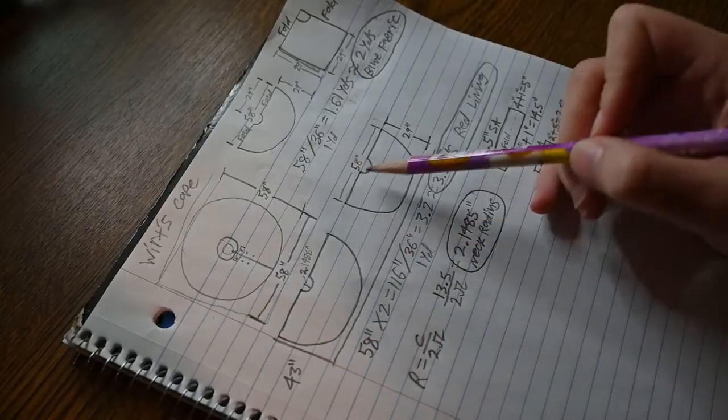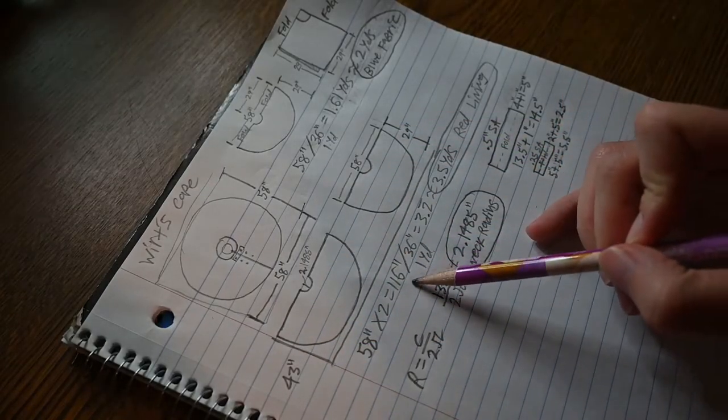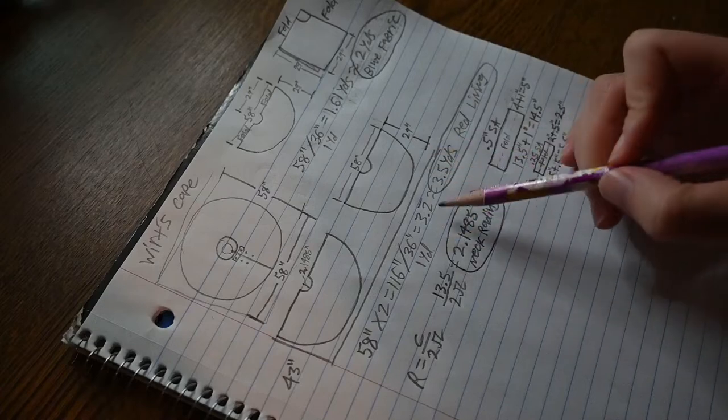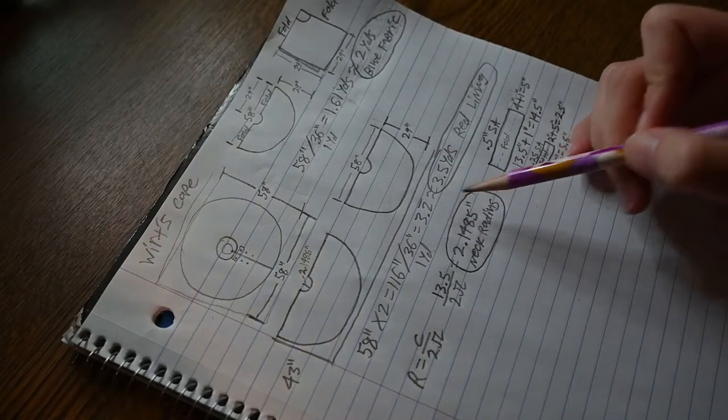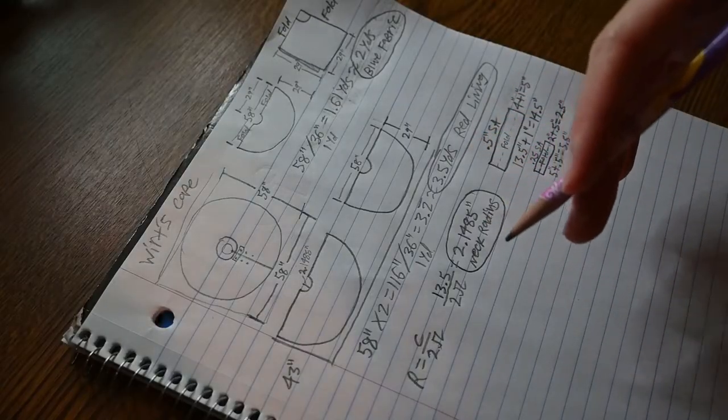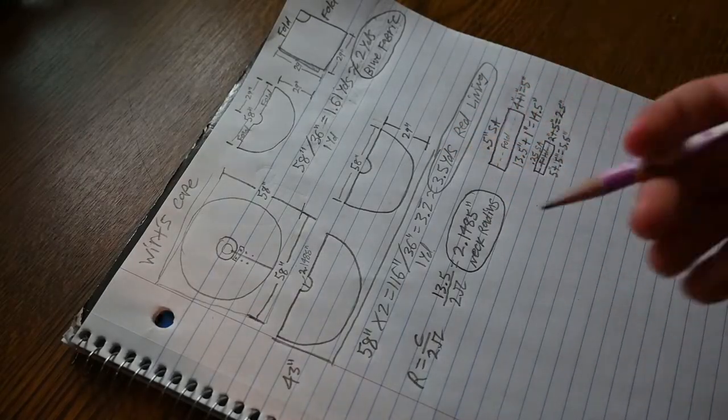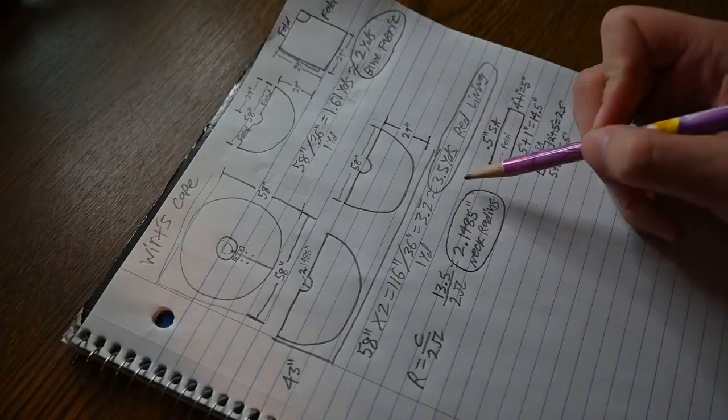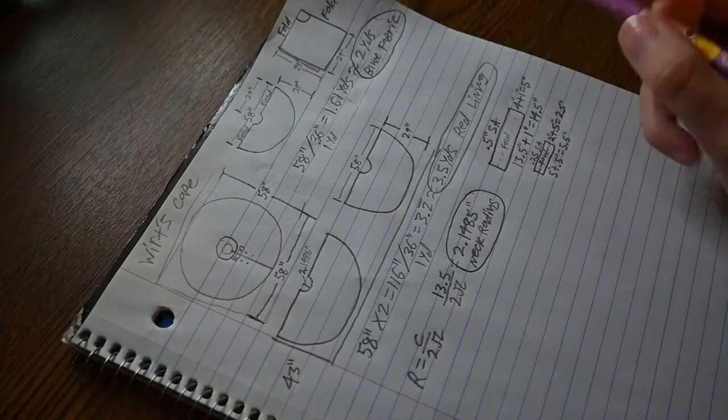So 58 times 2, that is 116 inches. And you divide that by a yard, and that is 3.2 repeating yards. And of course, because I wanted to make it easier, and so that way I have extra because I make mistakes, I rounded it up to 3.5 yards of red lining fabric.